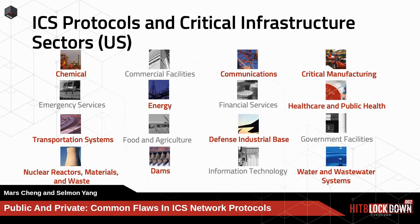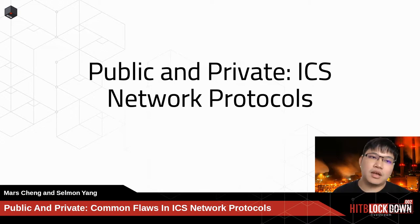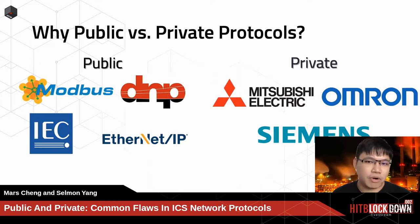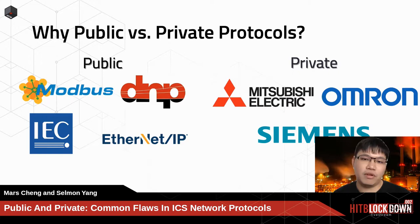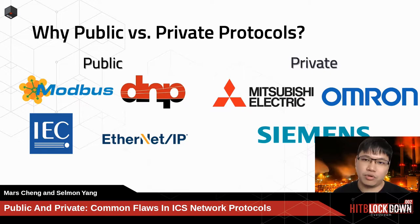Now we talk about public and private ICS network protocols. For public protocols, we can usually find detailed specifications on the internet, meaning attackers can easily become familiar with the contents of these protocols. There is a high chance they can write exploit code, because they can easily research protocols like Modbus, DNP3, or Ethernet/IP specifications. The simplest Modbus protocol has 51 pages of related reading. Ethernet/IP 2 has 355 pages, DNP3 has 821 pages, and Ethernet/IP CIP 1 has more than 1500 pages.